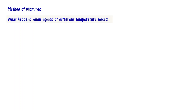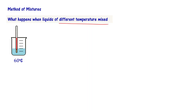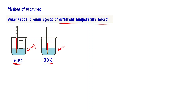Now what happens when liquids of different temperature are mixed? One beaker has water at some temperature, another beaker has water at another temperature. Let us consider this example: I have a beaker with 200 ml of liquid at 60 degrees centigrade, and another beaker with 200 ml of liquid at 30 degrees centigrade. You mix these two and pour them into one beaker, so total volume is going to be 400 ml.